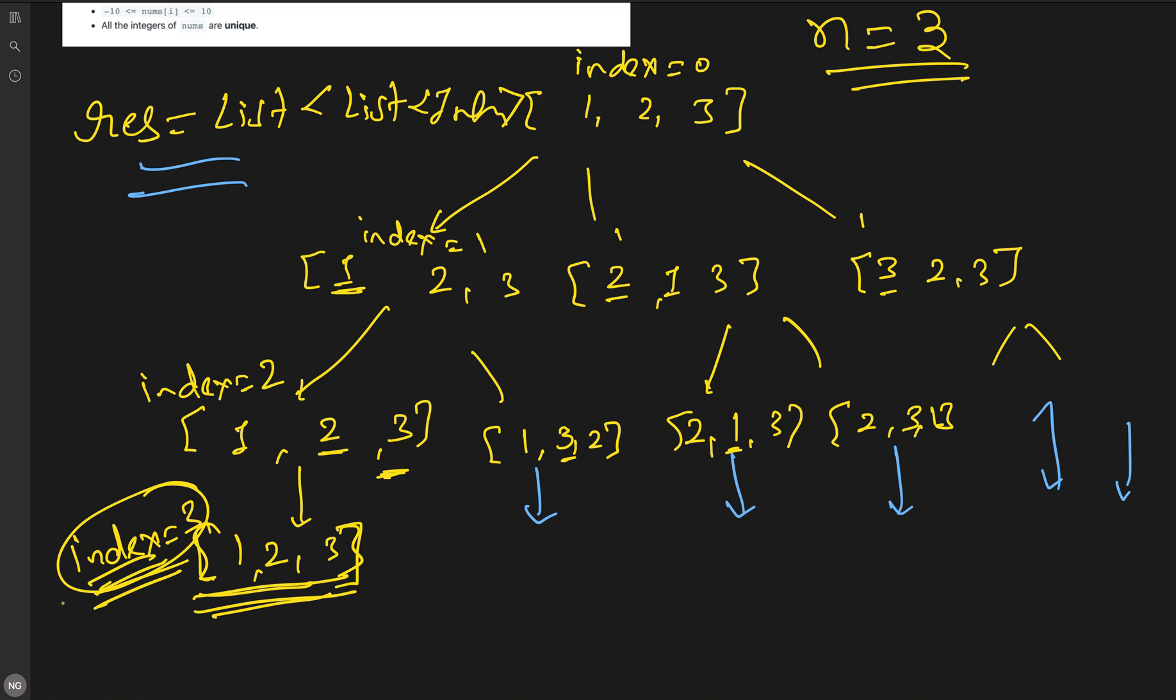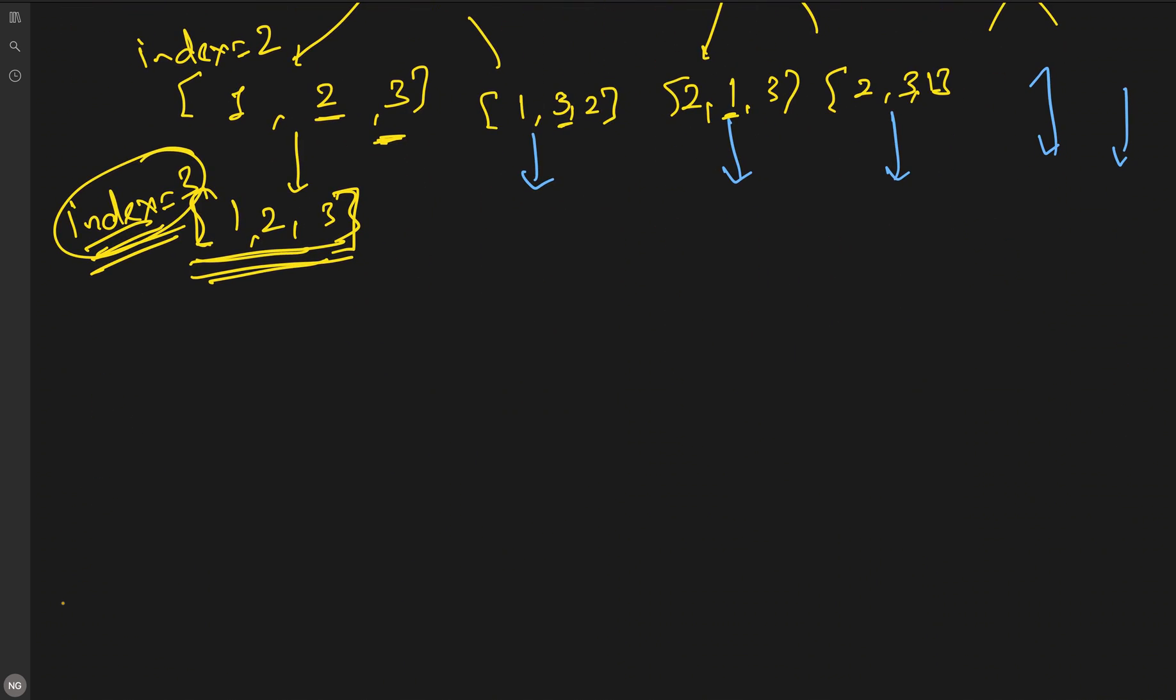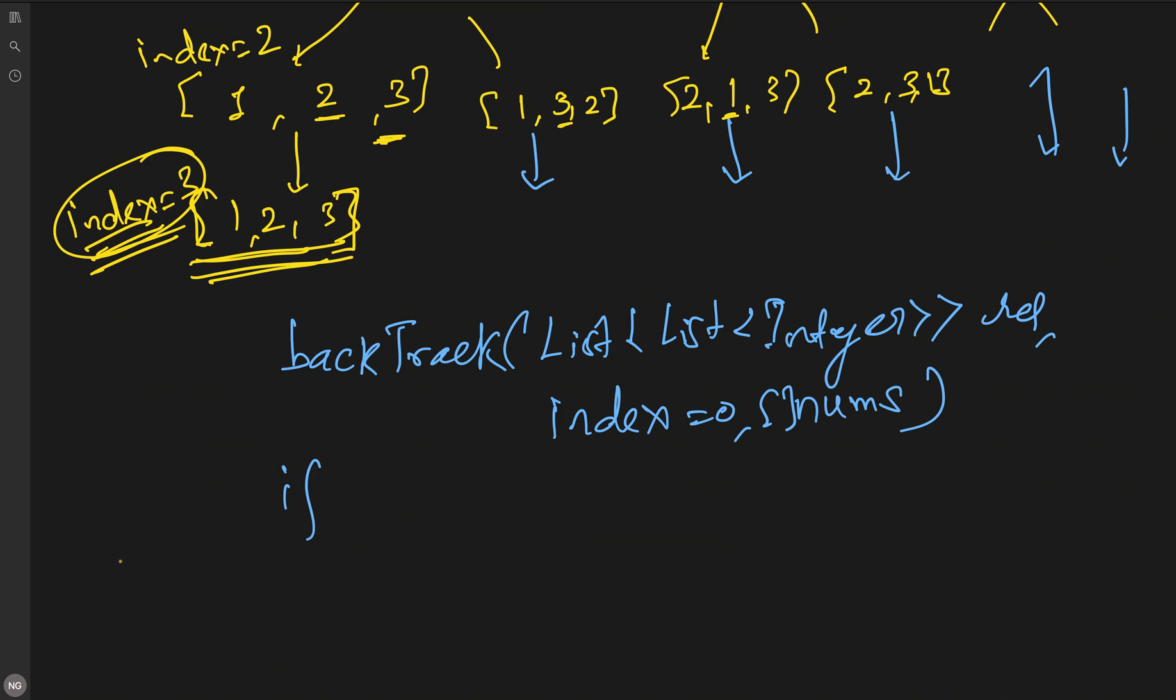Now how to implement in code? We will initialize this in our backtrack helper method. Here we will have a list of lists that will hold our result first, as a reference we will pass from the calling method. We will also pass an index that we will initialize from 0 from the calling method, as well as we will pass our nums, the original input array. The base condition here: we will check if our index is equals to nums.length. If this is the case, that means we found the permutation, so we will do some processing and store the permutation into the result. Here we need to fill the list as a list, so we will first convert this current array and store into the list.